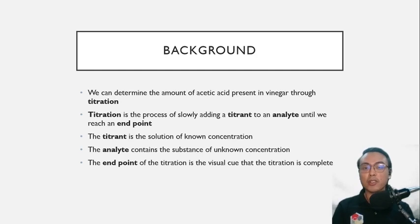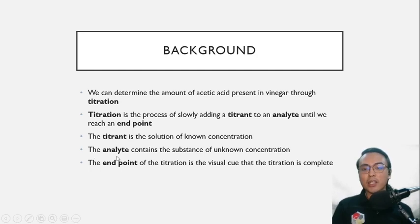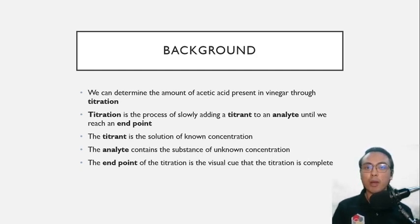So how do we plan to determine the percent by mass of acetic acid in a vinegar sample? We will be determining it through the process called titration. Titration is the process of slowly adding a titrant to an analyte until we reach an endpoint. The titrant is the solution of known concentration — it is very important because without it you cannot determine the concentration of your unknown solution. The analyte contains the substance of unknown concentration; in this case it's our vinegar sample.